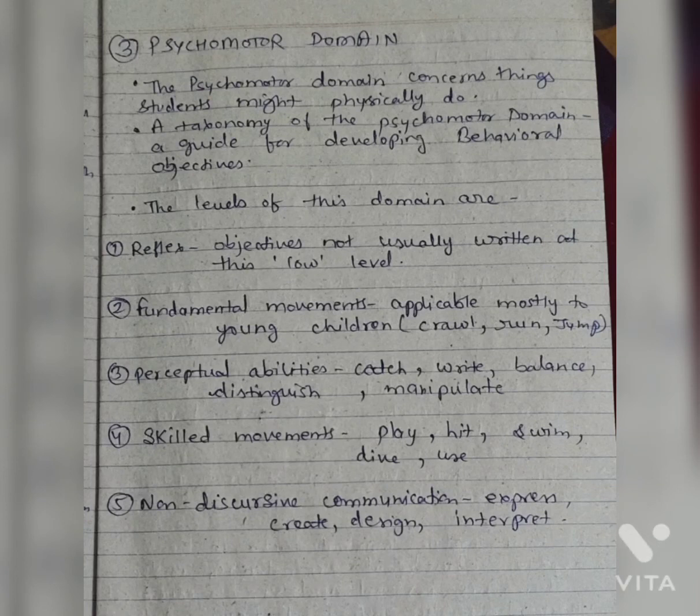Perceptual abilities: catch, write, balance, distinguish, manipulate. Skilled movements: play, hit, swim, dive, use. Non-discursive communication: express, create, design, interpret.